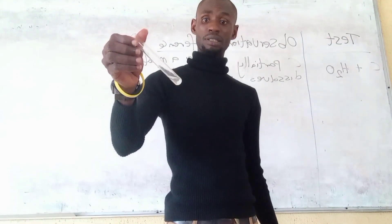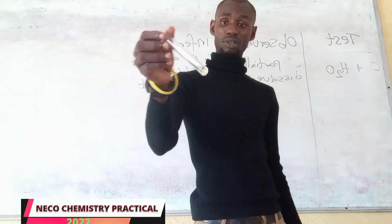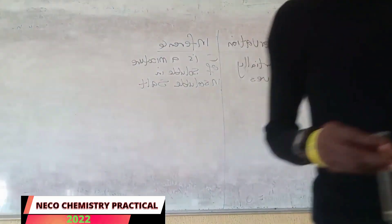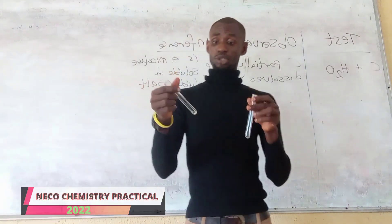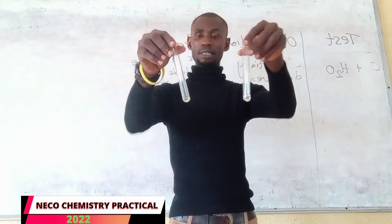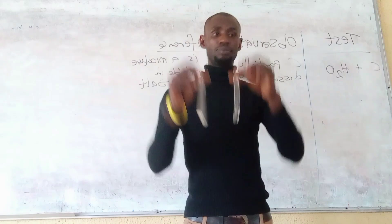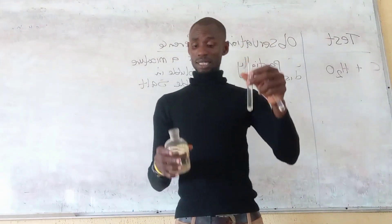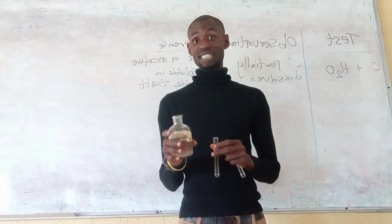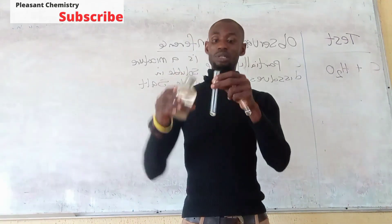We are going to divide the dissolved residue solution into two portions. I have dissolved the residue with hydrochloric acid and divided it into two. In the first portion, I am adding sodium hydroxide (NaOH). Remember, we use sodium hydroxide to test majorly for cations.